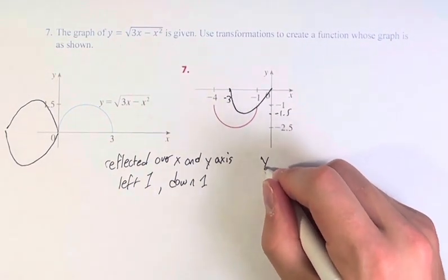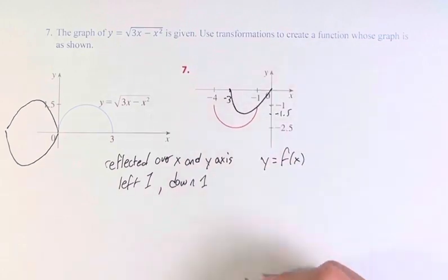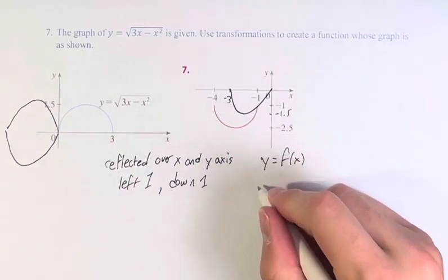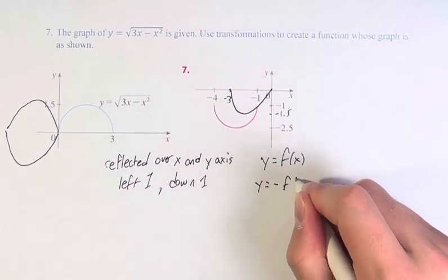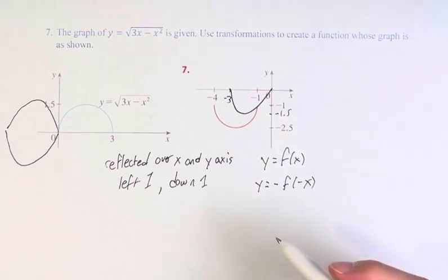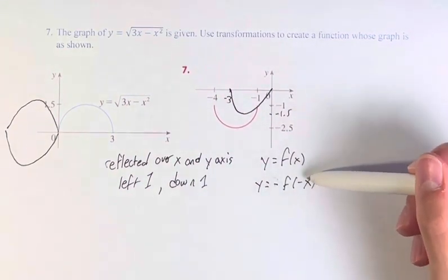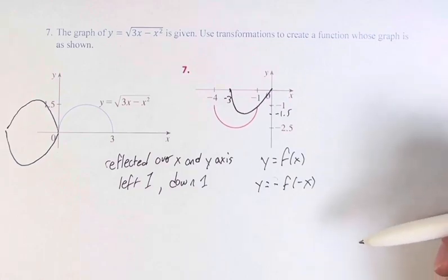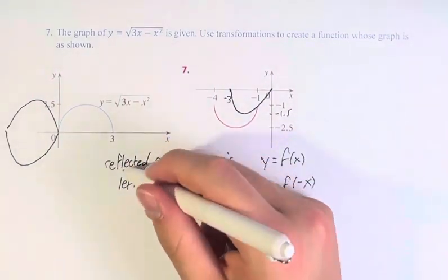So if we have the original function, we'll call it f of x. Reflecting over both axes turns it into negative f of negative x. Right? This negative is for reflecting over the x-axis. This one is for the y-axis.